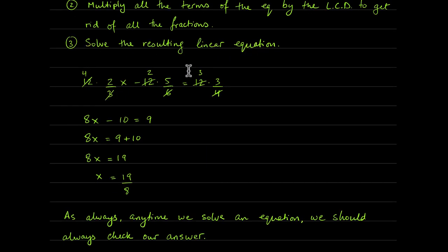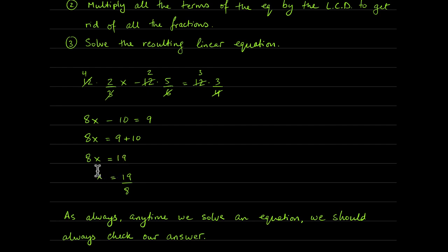After canceling, four times 2x gives us 8x, negative two times five gives us negative 10, and three times three gives us 9. This is a simple linear equation. Adding 10 to the other side gives 9 plus 10 equals 19, and dividing by 8 gives x equals 19 over 8.